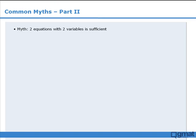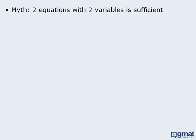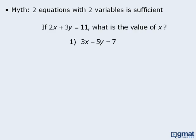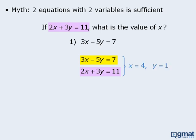The next myth to discuss is the one that says two equations with two variables will always provide sufficient information to determine the individual values of x and y. Now sometimes this rule works. For example, in this question we want to find the value of x. We are given one equation with two variables, and statement 1 provides a second equation with two variables. With these two equations, we can use one of several methods to solve for x and y. So in this case, having two equations with two variables provides sufficient information.